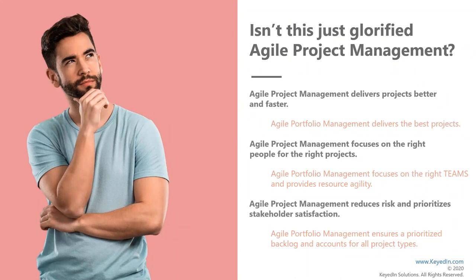When you start to look at risks, prioritizing, and making sure we're meeting stakeholder satisfaction in Agile Portfolio Management, we're talking more about a prioritized backlog. Not every project fits one pattern — you're still going to have projects that follow traditional waterfall PMBOK methodologies, others where you're doing more of an agile approach, and some following lean methodologies. You're going to see all these different flavors come into play, and it's important to recognize that not everything fits in one box.